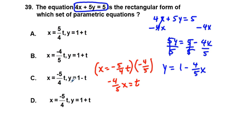And so replacing t in this equation here, we have y equals 1 minus negative 4 fifths t. And you see, this is going to end up being 1 plus 4 fifths t. I said t, I should have said x. 4 fifths x equals 1 plus 4 fifths x, which does not match this one up here. So this is not our correct answer.